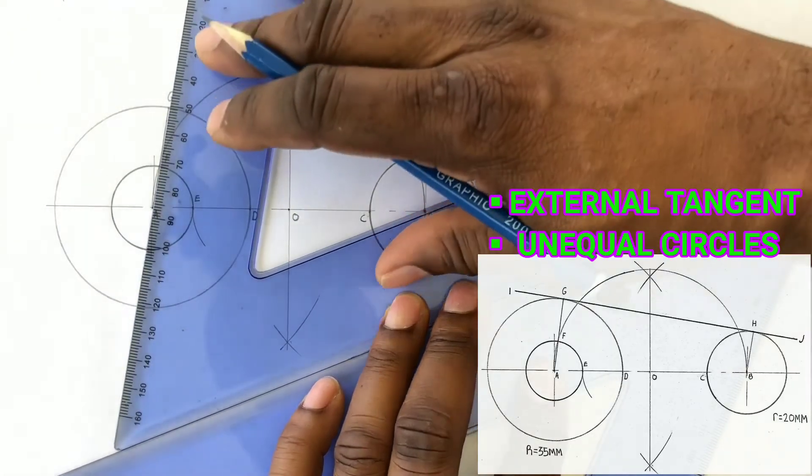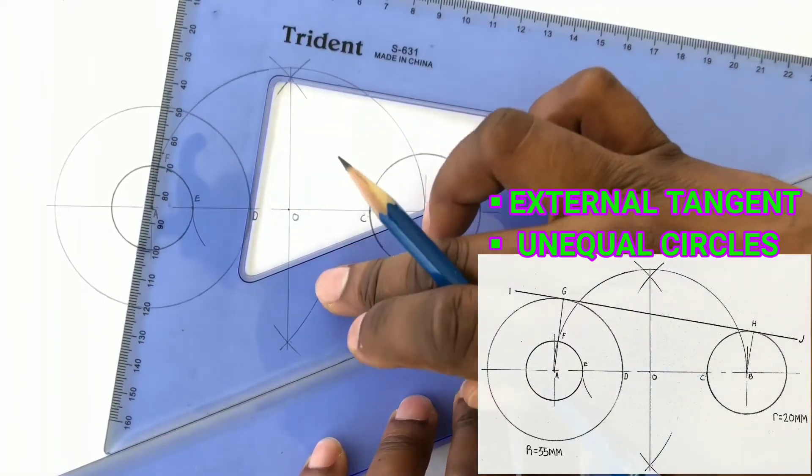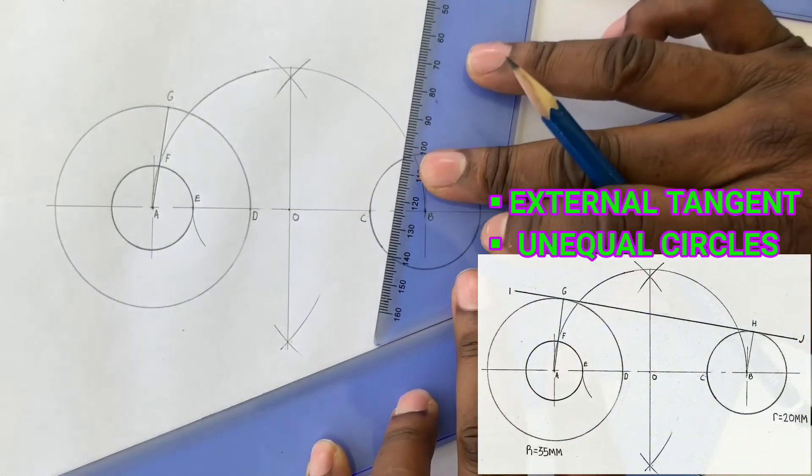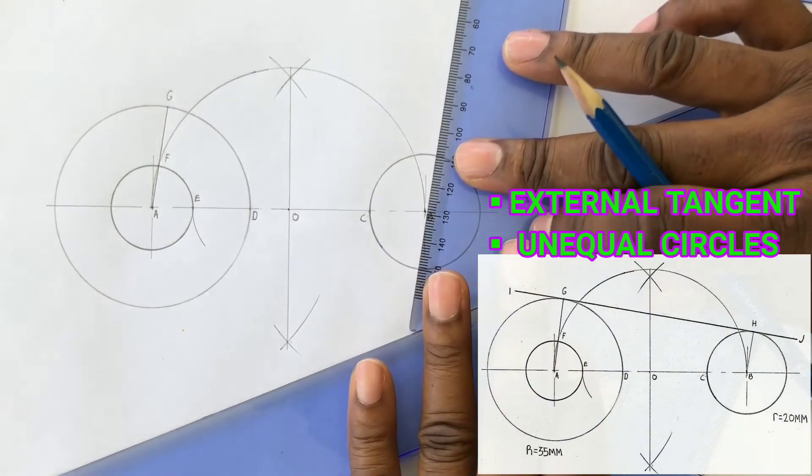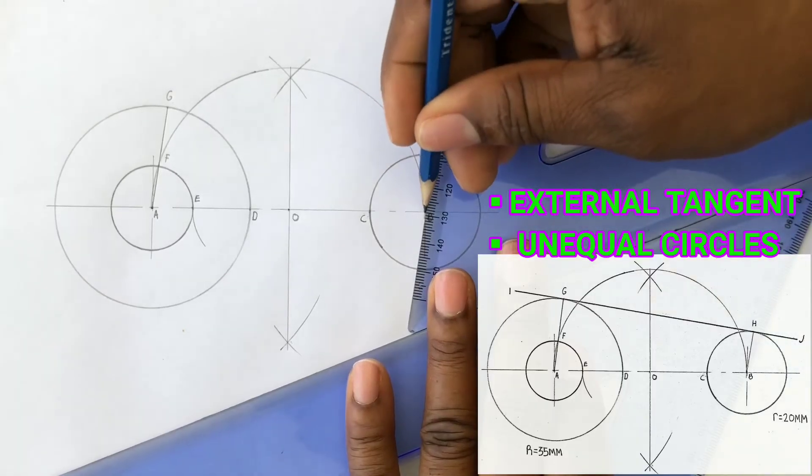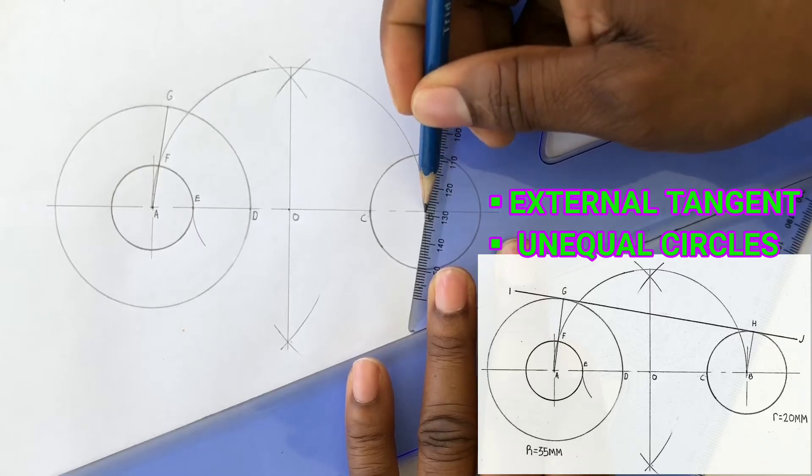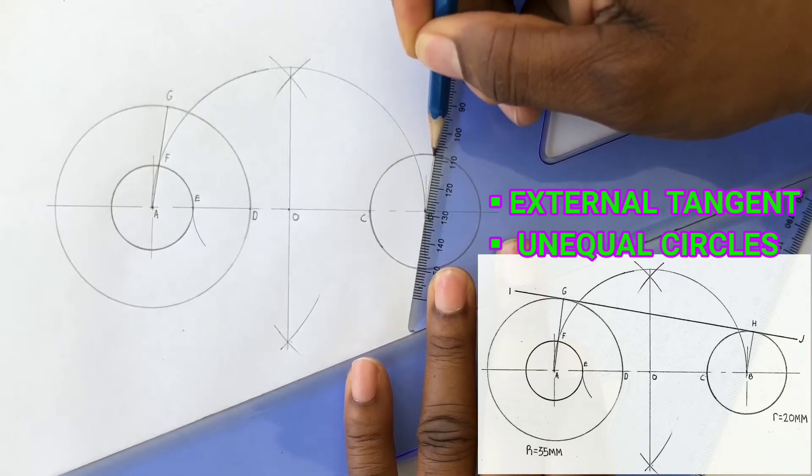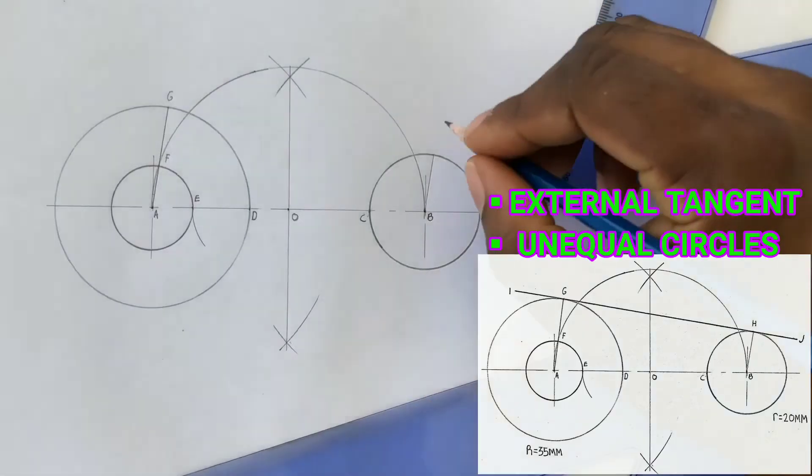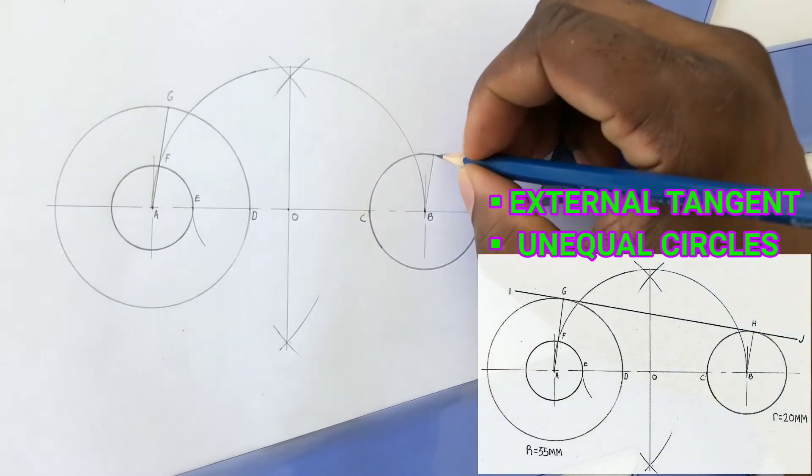Hold your lower set square steady and slide the top set square until it reaches point B. Draw a line from point B to touch the circumference of the circle giving us point H. Label point H.